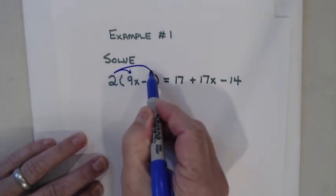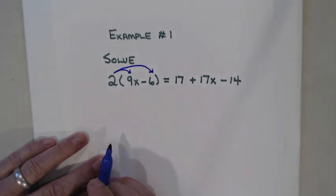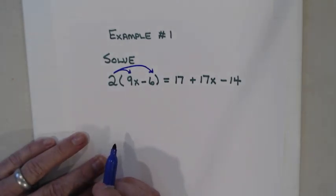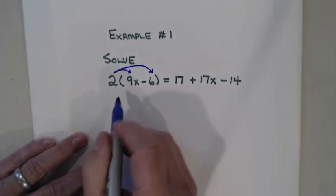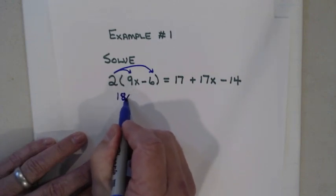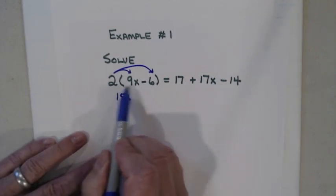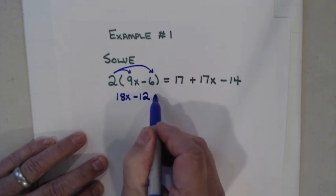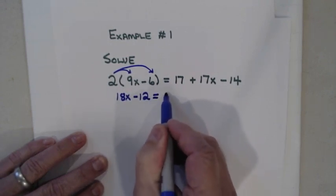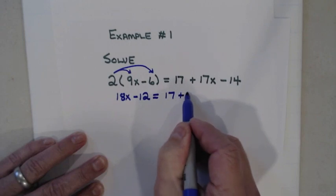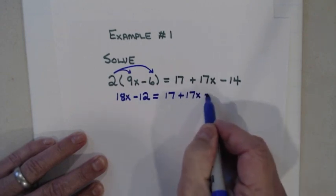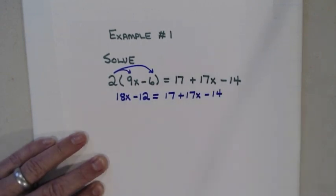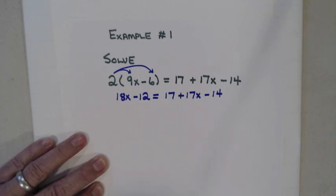Using the distributive property, we take the 2 on the outside of the parentheses and multiply it to each term on the inside. 2 times 9x is 18x, and 2 times negative 6 is negative 12. Bring down the equal sign and the rest of the equation. The distributive property is the first thing we always look for.